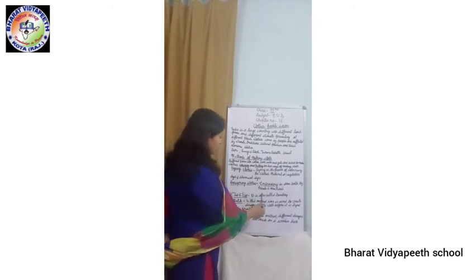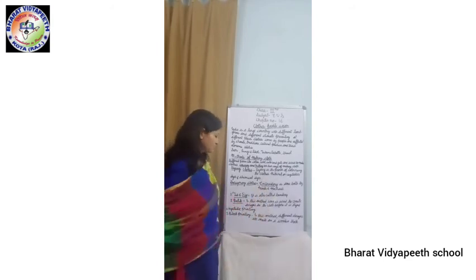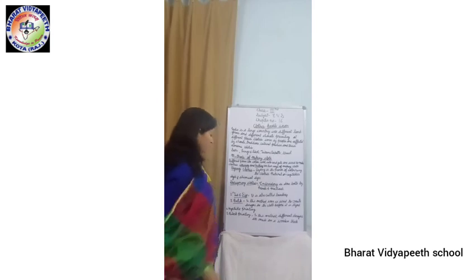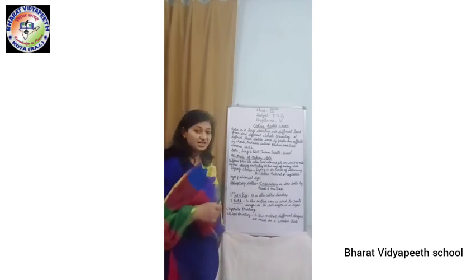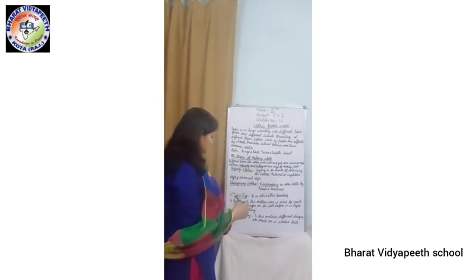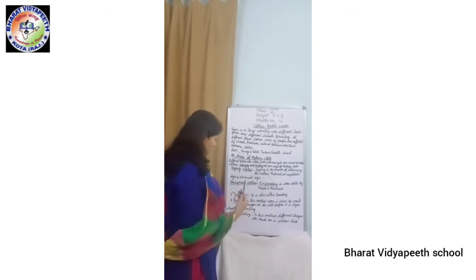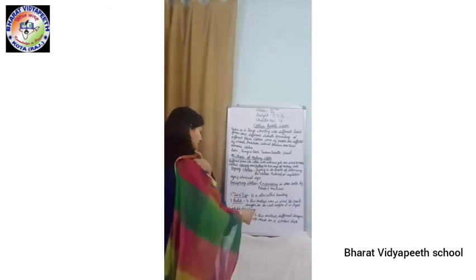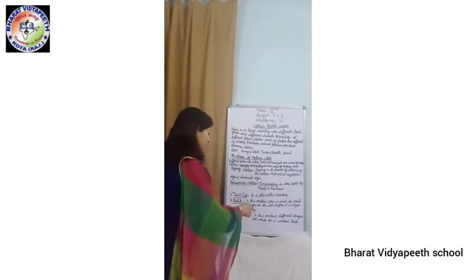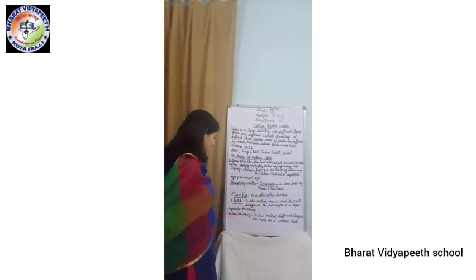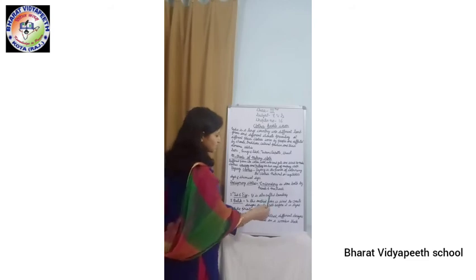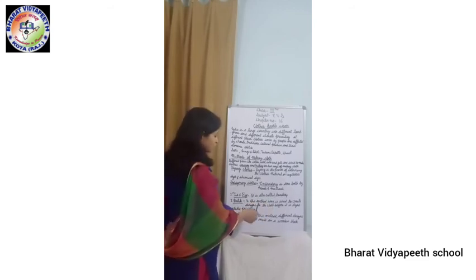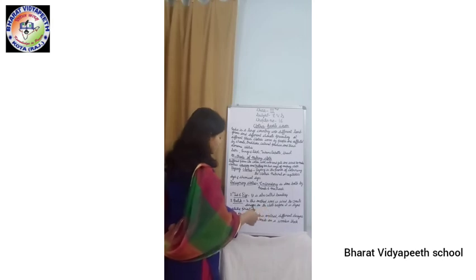Another method is called batik — it is also called tie-and-dye or bandage. In this method, wax is used to create a design on the clothes before it is dyed.